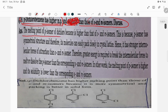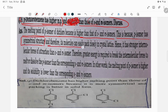The melting point of para isomer of dichlorobenzene is higher than the ortho and meta isomers. This is because para isomer has symmetrical structure and therefore its molecules easily pack closely in crystal lattice. Hence it has stronger intermolecular forces of attraction.